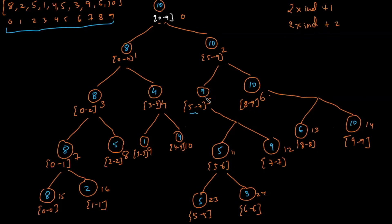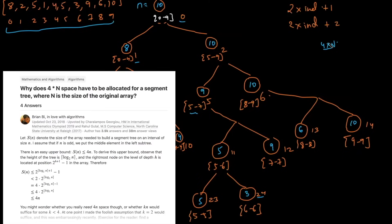The segment tree is a tree structure but you can store it in an array, since everything is indexed as 0, 1, 2, 3, 4... The 0th index represents the range 0–9, the 1st index represents 0–4, the 8th index represents 2–2, and the 23rd index represents 5–5. The value of N was 10 and we went up to index 24, so the maximum index can go up to 4*N. If you want the proof for this, you can refer to the article linked in the description.